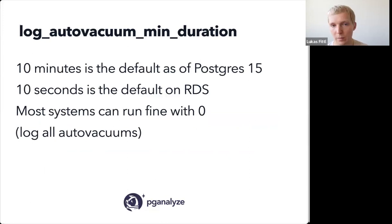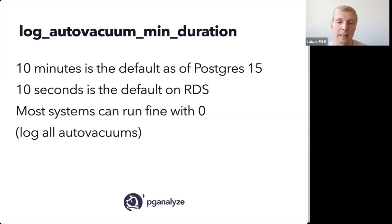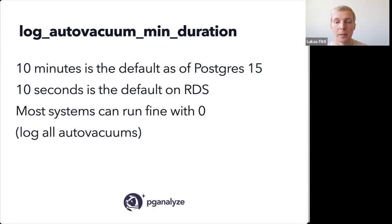The good news is that log_autovacuum_min_duration is now set to 10 minutes as a default as of Postgres 15, so if you have very long-running vacuums, you'll essentially always get the logs. The default on RDS, for example on AWS, is actually 10 seconds, also in older versions — so thank you to the AWS team for making a reasonable choice there. Personally, I would argue you should be able to run most systems with log_autovacuum_min_duration zero, because it's just a set of log lines at the end of each vacuum, and it's just so useful to understand all the vacuums that have run.